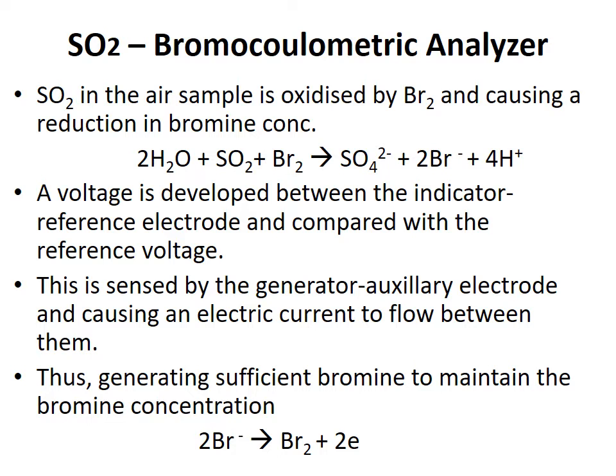The reaction is: 2H₂O + SO₂ + Br₂ → SO₄²⁻ + 2Br⁻ + 4H⁺. The reduction in bromine concentration changes the oxidation-reduction potential of the reagent. A voltage is developed between the indicator electrode and the reference electrode and compared to a reference voltage. The difference is sensed by the auxiliary generator electrode system, causing an electric current to flow and generating sufficient bromine to maintain the original concentration according to: 2Br⁻ → Br₂ + 2e⁻. This current flow is a measure of the SO₂ concentration in the air stream.